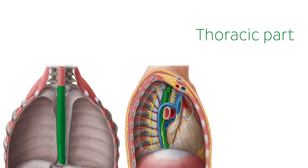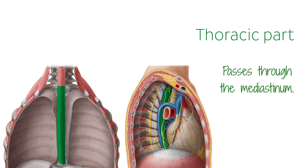The esophagus passes through the mediastinum in both the superior and the inferior posterior sections, before entering the abdominal cavity by passing through the right crus of the diaphragm at the level of the 10th thoracic vertebrae. It continues below the diaphragm for approximately another 2 cm, before merging with the stomach.